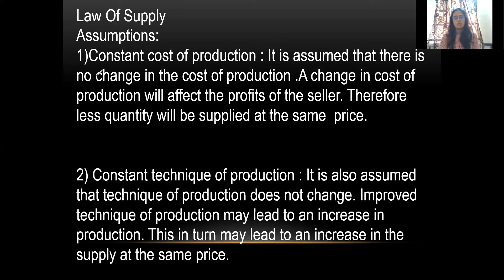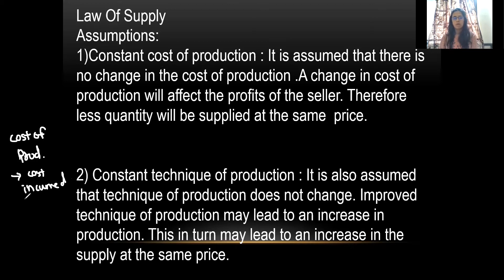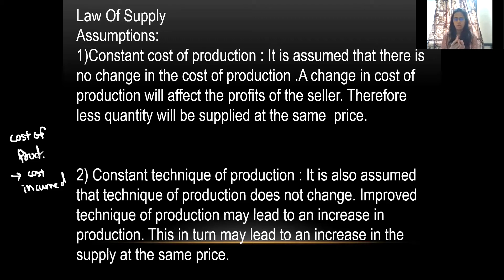The first assumption is constant cost of production. Cost of production is nothing but the cost incurred while producing a particular commodity — whatever expenses we incur by producing a particular commodity. While proving this law, the cost of production should not be changed; it should remain constant. Because if the cost of production changes, the profit level changes, and maybe less quantity will be supplied at the same price.